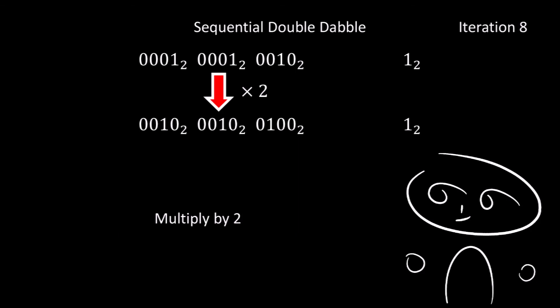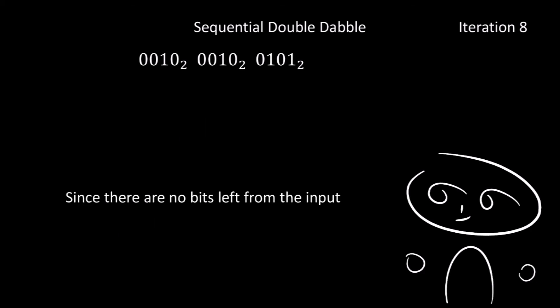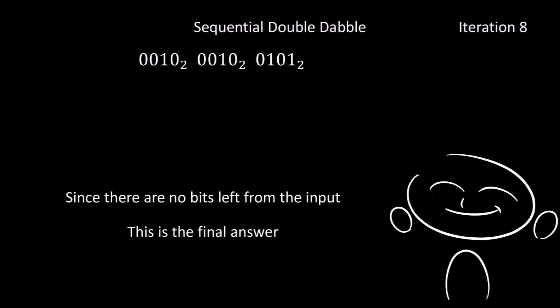For the final eighth iteration, we multiply by 2, so 1 becomes 2, 1 becomes 2 again, then 2 becomes 4. Then we shift in the final bit from our input, which is a 1, so the 4 becomes a 5. Now that completes our iterations, since there are no more bits left in the input. So this must be our final answer. And it is, as you can see, it is 2, 2, 5, which is correct.